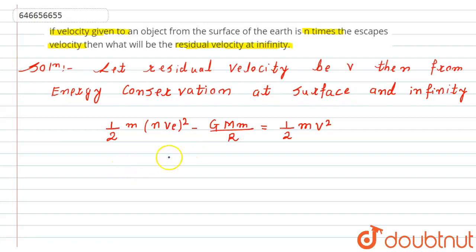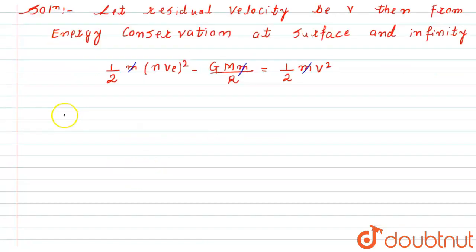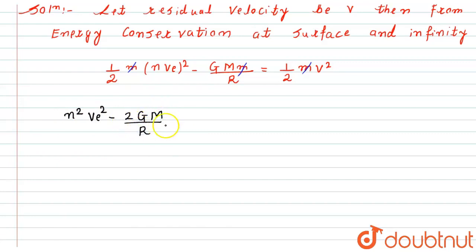From here, the m's and the 2's will cancel. So we get: n² × vₑ² minus 2GM/r equals v².